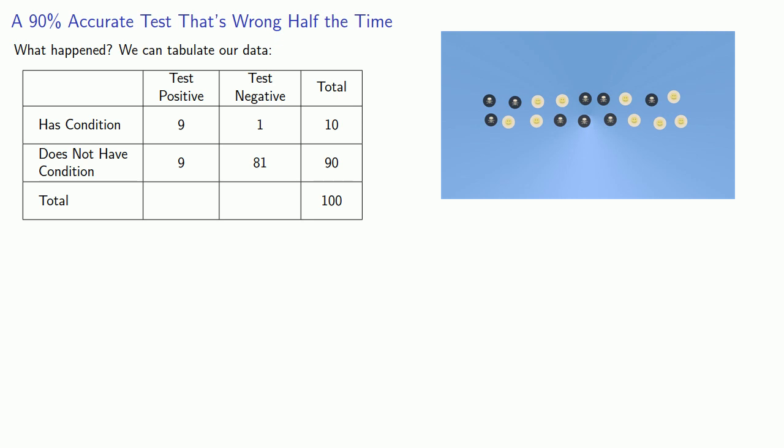And all together, that means that 9 plus 9, 18 people will test positive. But only half of them will actually have the condition.